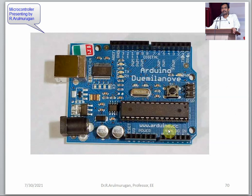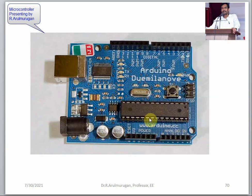This is called the Arduino UNO board — one of the basic Arduino boards. The cost is around 500 rupees. It is not suitable for high-end applications because it is a basic board. Just like an early button-type mobile phone costing 1000 rupees could only make calls and send messages — it had no internet.